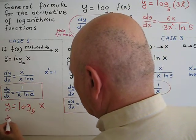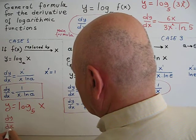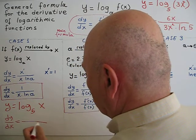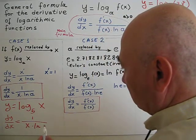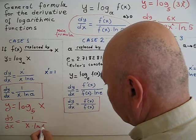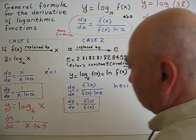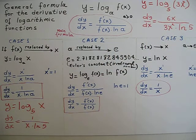dy over dx will be 1 over x. The base is 5, so 5 comes here.